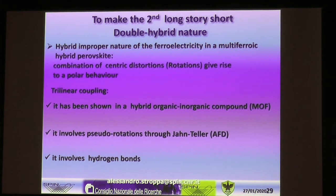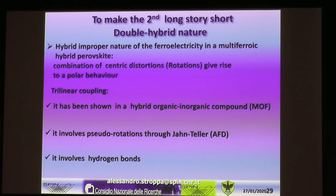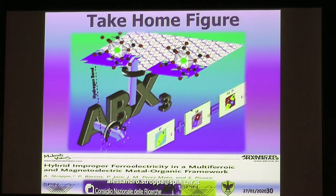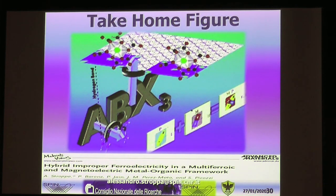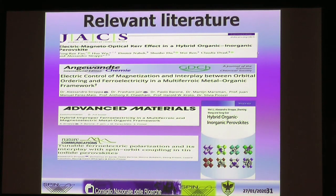To summarize: we have demonstrated the hybrid improper nature of ferroelectricity in this multiferroic hybrid perovskite, where a trilinear coupling is involved — the first such case in a hybrid organic-inorganic compound. The particular case here involves a pseudo-rotation through the Jahn-Teller modes, with coupling between the two different modes mediated by hydrogen bonds. The two rotations — tilting of the organic cation and pseudo-rotation in the Jahn-Teller modes — are linked by hydrogen bonds connecting the organic cation to the framework.